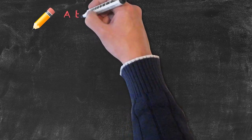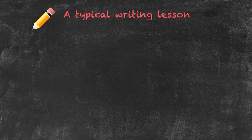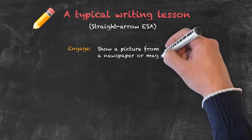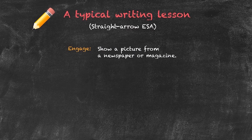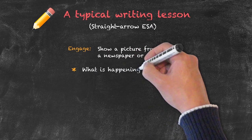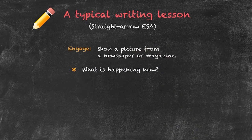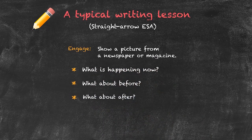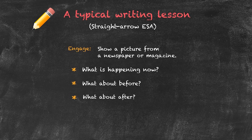Let's have a look at what might take place in a typical writing lesson, again using the format of a straight arrow ESA lesson. Our first stage is the engage, and what we need to do is try to generate interest. An example here could be showing a picture taken from a newspaper or magazine and asking students some questions. From the picture, we can ask them what is actually happening now, then generate more interest by asking them to give ideas about what was happening before this picture took place and what happened after. We're building up the idea of a sequence of events: before, during, and after the picture.